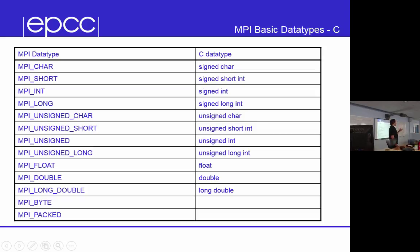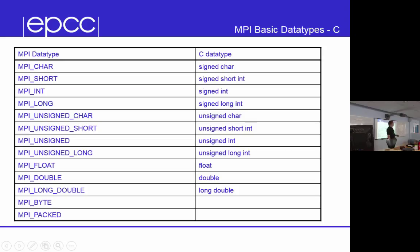Because of the way C and Fortran work, a function doesn't know what type it was passed. When you pass an array to a C or Fortran function, it just comes through as a pointer — you need to tell it what the type was. So in C, if you define a variable as a signed int, when you call an MPI routine you have to tell it that's an MPI int. The ones you'd mostly use are int, float, and double.